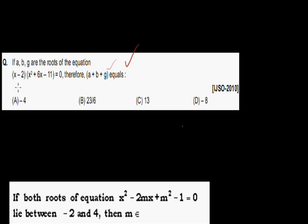But there is no need to do that. It's clear that one root is 2. The sum of the two roots of x² + 6x - 11 = 0 is -6. Therefore 2 + (-6) = -4. The answer is -4. Obviously one root is 2 — I don't know whether it is a, b, or g — and the remaining two roots have a sum of -6. Therefore the total sum is -4.